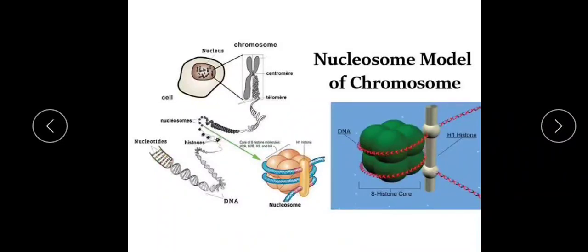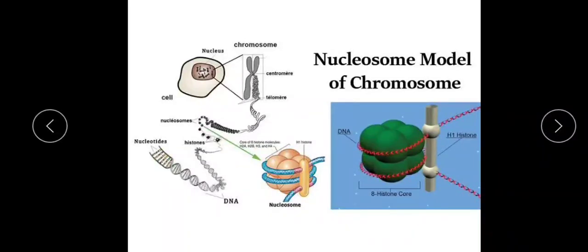The nucleosome core is composed of two molecules each of H2A, H2B, H3, and H4. These four histones — two molecules each — form the nucleosome core, which we call the octamer. The DNA helix is wrapped around this histone octamer core. Each histone core is encircled by 1.8 turns of DNA, and this 1.8 turns contains 146 base pairs.